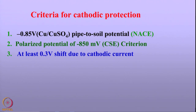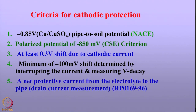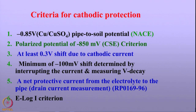Another criterion is a 0.3 volt shift from the corrosion potential or the natural potential of the metal towards the negative direction. The fourth criterion involves shifting the potential by 100 millivolts, determined by interrupting the cathodic protection current and measuring the voltage decay. There is also a criterion based on a net protective current from the electrolyte to the pipe, called a drain current measurement. The last criterion is based on a potential versus log i curve determined for a given structure. We shall look in detail at the merits and demerits of these criteria.